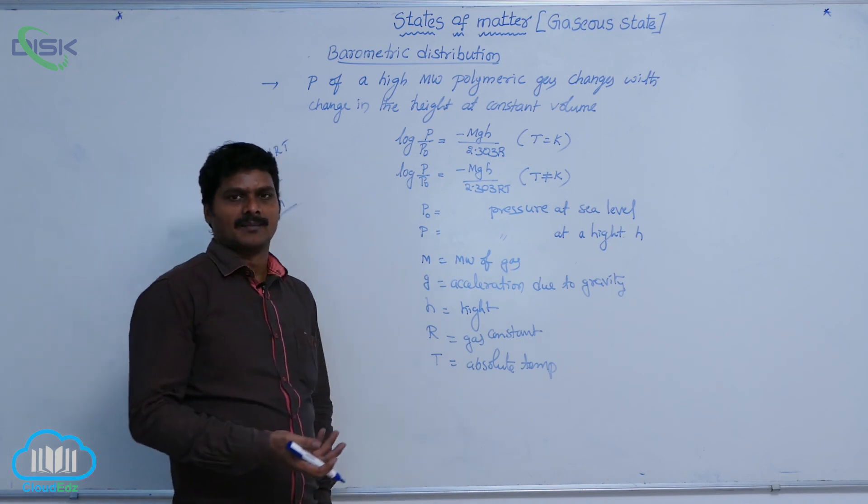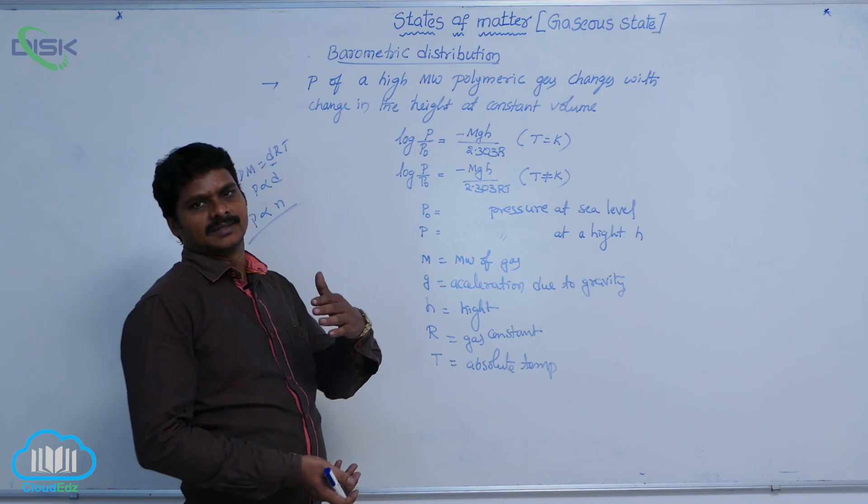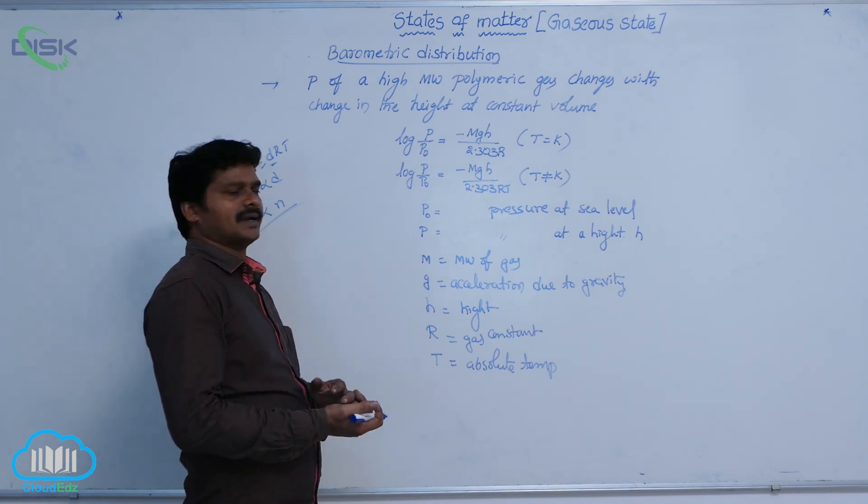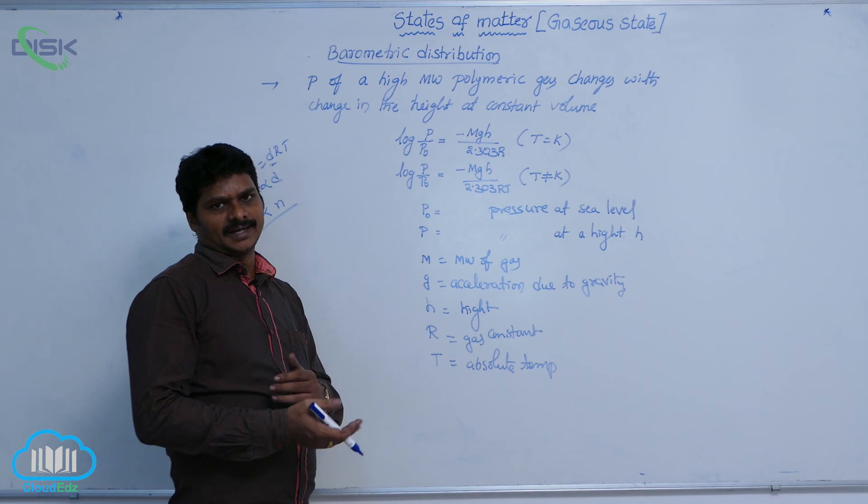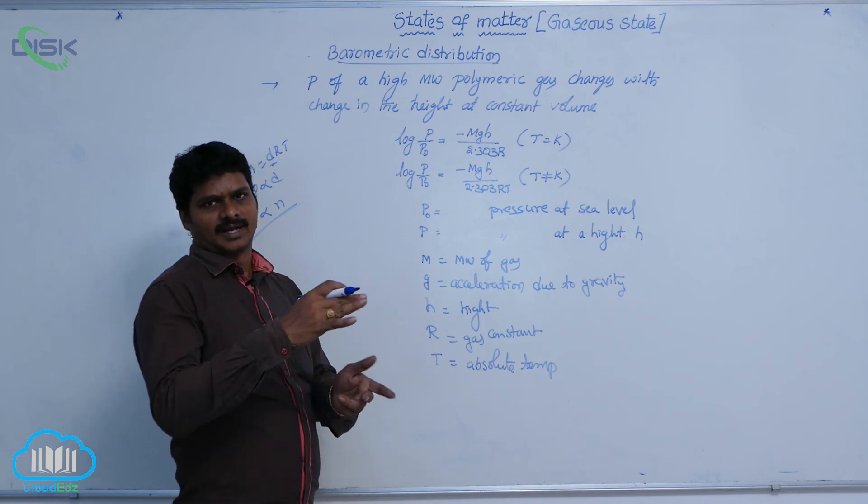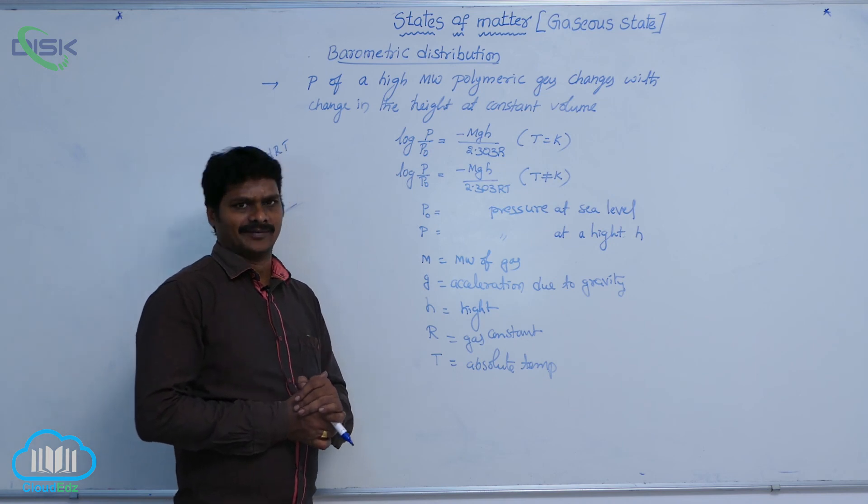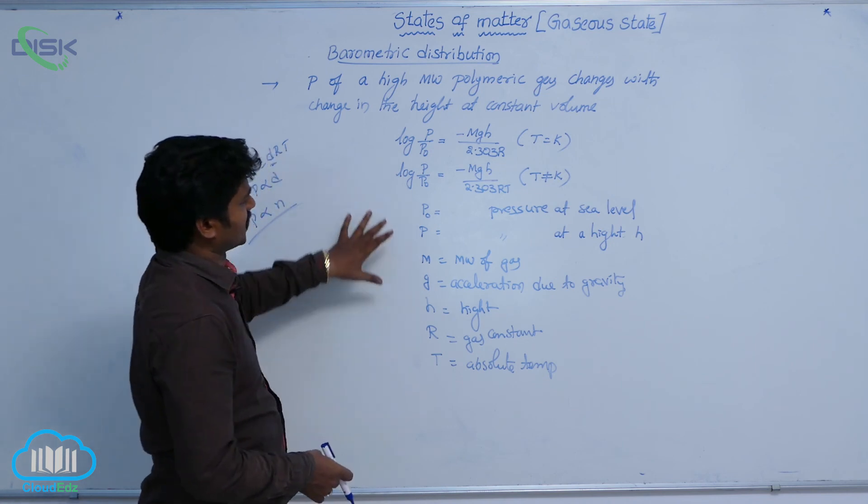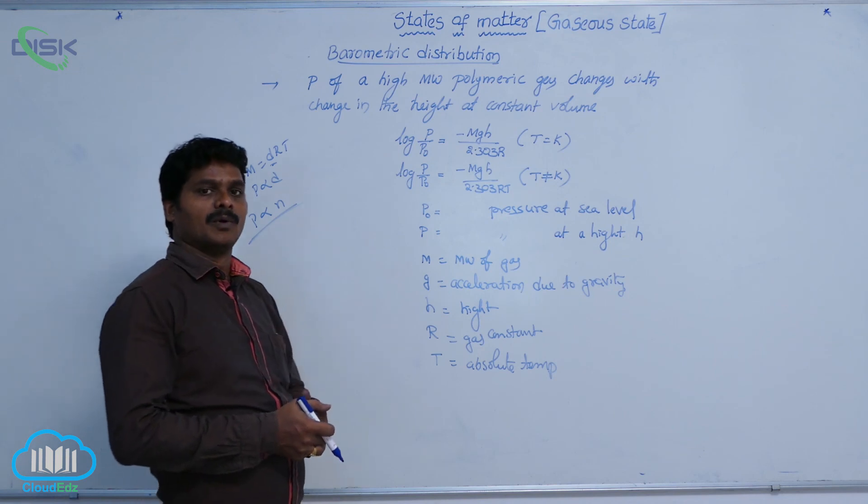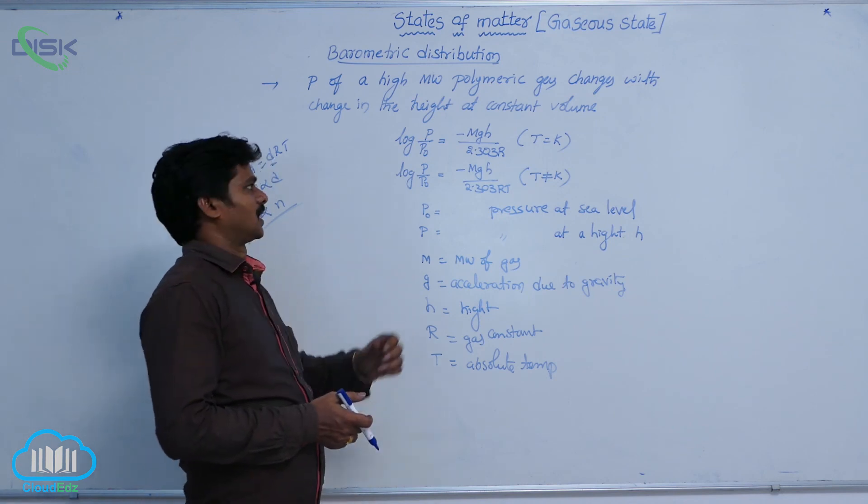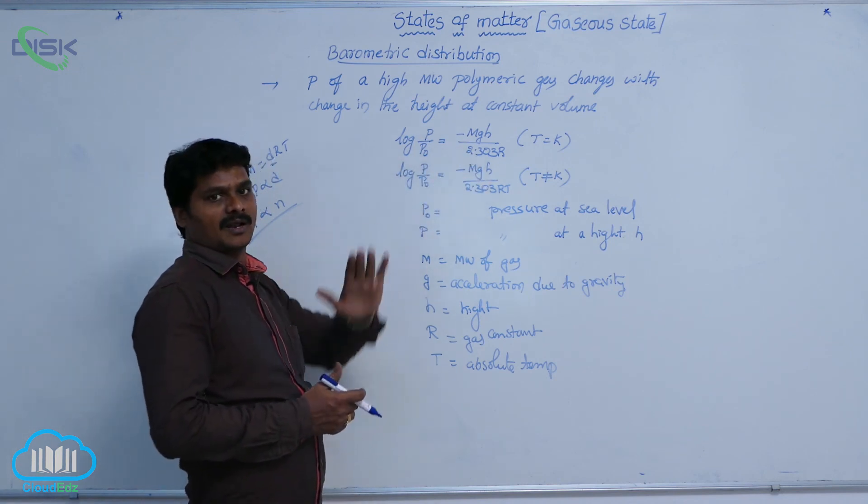There N is number of moles at high altitude. N naught is the number of moles at, volume here constant, N naught is the number of moles at sea level. So, this expression is useful to solve the problem related to pressures for a high molecular weight gas.